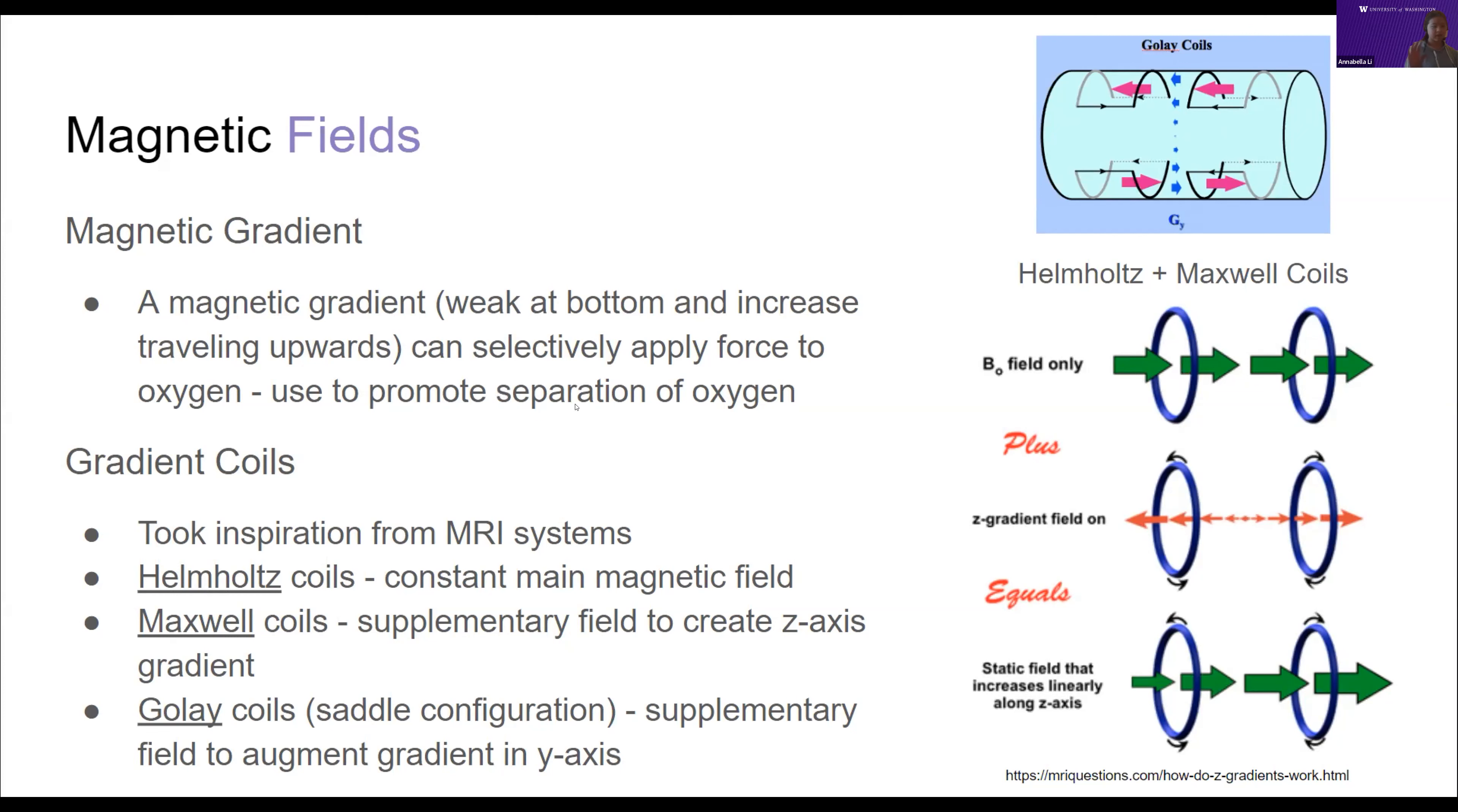In order to establish this gradient, we took inspiration from MRI systems, magnetic resonance imaging systems. We took three coils that they use to do gradients in MRI: Helmholtz coils, Maxwell coils, and Golay coils, and we combined them to create the vertical gradient that we wanted in our own system. Here are some diagrams of these different coils and their shapes on the right side of the slide. There are a lot more details in our open source document, but there's not enough time to go through all of them right now.